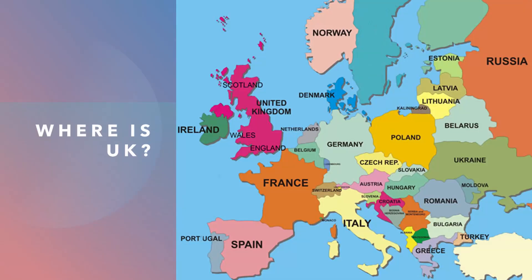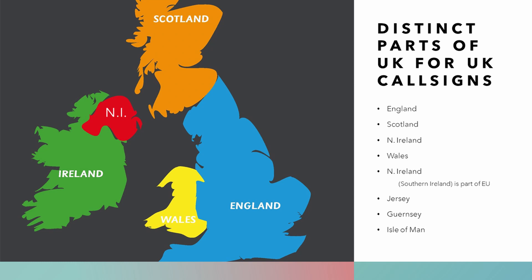Let's start off by taking a look at where the UK is. As you can see, the UK is on the western side of mainland Europe and consists primarily of four countries: England, Scotland, Wales and Northern Ireland. Additionally, in terms of UK call signs, we also consider Jersey, Guernsey and the Isle of Man separately.